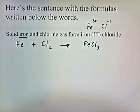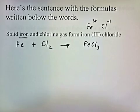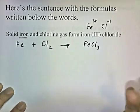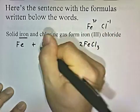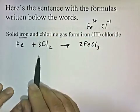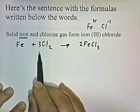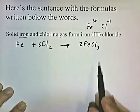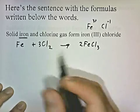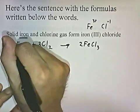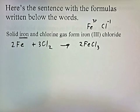So that's how you write the formula for iron 3 chloride. Now let's balance it. If I put a 2 in front of Fe and a 3 in front of FeCl3, that gives me 6 chlorines on each side — 3 times 2 and 2 times 3. I've got 2 Fe's on the left, so I'll put a 2 there. That balances the equation.